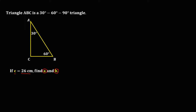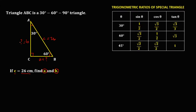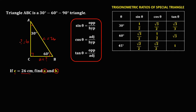In the given triangle, opposite to angle C is side C, opposite to angle A is side A, and opposite to angle B is side B. Since side C equals 26 cm, and side A and side B are unknown, we're going to use the trigonometric ratios of special triangles. In this case, we're going to use 60 degrees as our angle.